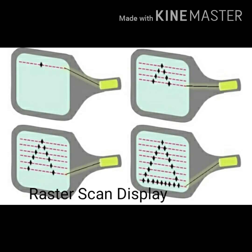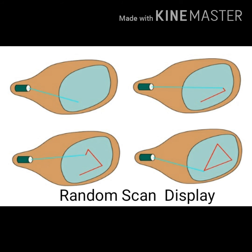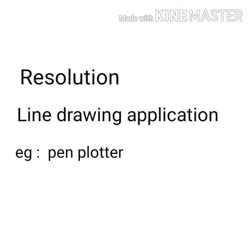The figure shows the sweeping of electron beams across the raster scan display. Here we can see the electron beams are swept across the screen one row at a time from top to bottom, creating a pattern of illuminated spots. In random scan display, the electron beams are only directed to those points where the picture is to be stored, so the resolution of random scan display is higher than raster scan display. We also use random scan displays in line drawing applications.